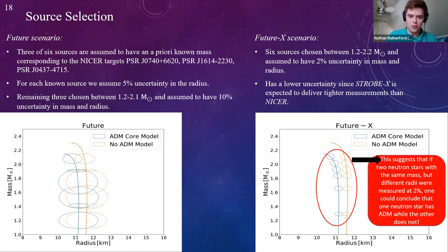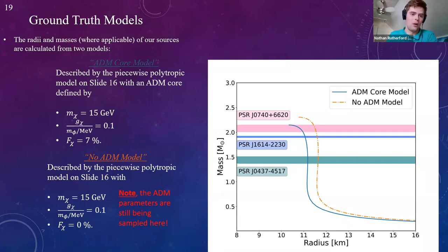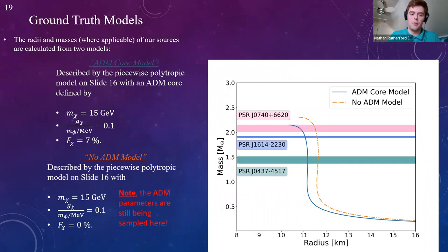Now let's talk about the ground truth models used for calculating mass and radii of synthetic sources. We consider two: the ADM core model, which uses the piecewise polytropic baryonic model with an ADM core defined by a 15 GeV particle mass, 0.1 self-repulsion strength, and 7% dark matter mass fraction. The second is the no-ADM model where the mass fraction is set to zero. Importantly, this doesn't mean we're not sampling over the dark matter parameter space — dark matter is still being considered; it's just another ground truth model we're investigating.